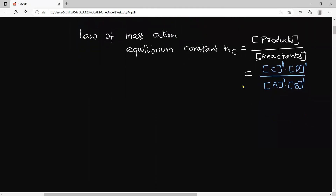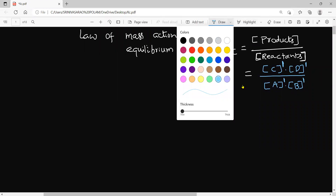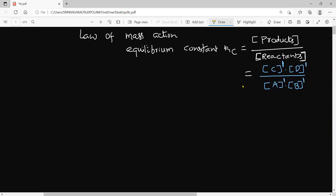Let us consider a few equations. For example, equation number 1 — ammonia gas molecule. Suppose if you have the equation like this: N₂ + 3H₂ ⇌ 2NH₃ (gas). Just imagine this is your equation. How do you express the equilibrium constant?